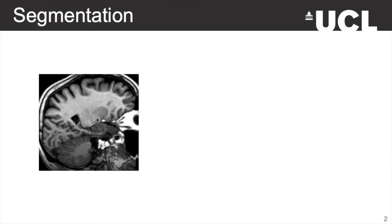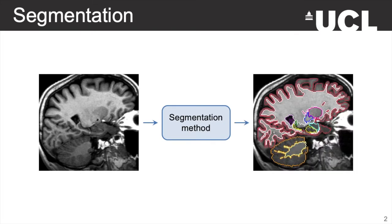As a little reminder, segmentation starts with an image to which we apply a segmentation method in order to retrieve delineations for a given set of regions of interest. Segmentation is a key task in medical image processing because it is a prerequisite for a wide array of analyses such as volumetry, morphology, or connectivity. In this talk, we focus on segmentation of brain MRI scans, for which we have four popular classes of methods.